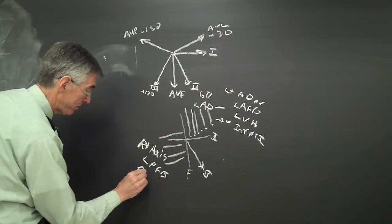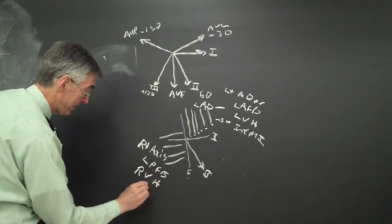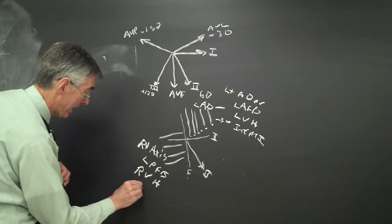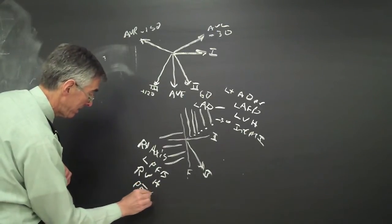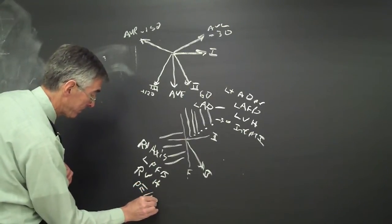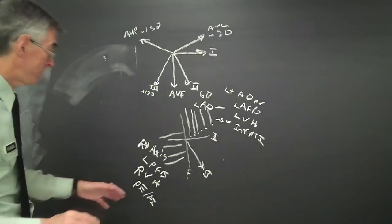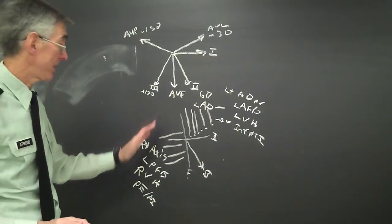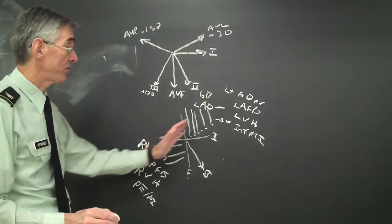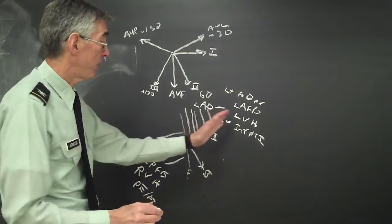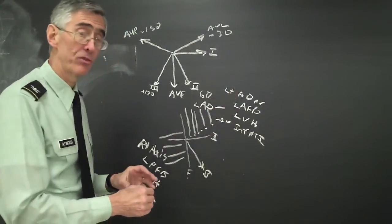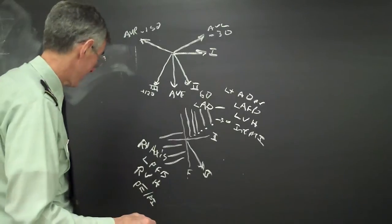RVH, right ventricular hypertrophy, and pulmonary embolism infarction. Right bundle branch block can also be right axis, and left bundle branch block can be left axis. But that's for axis deviation.